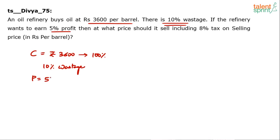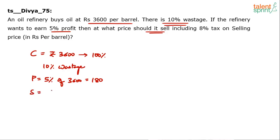The refinery wants to earn 5% profit. 5% of 3600 is 180 rupees. So the selling price is cost price plus profit: 3600 + 180 = 3780. But this 3780 is the selling price for 90% only.